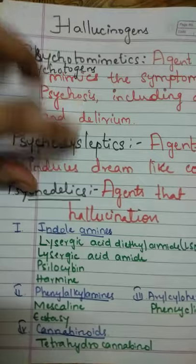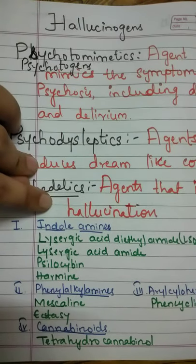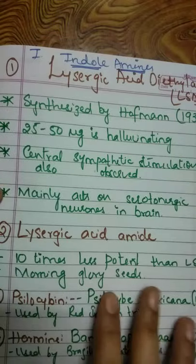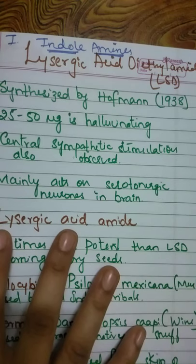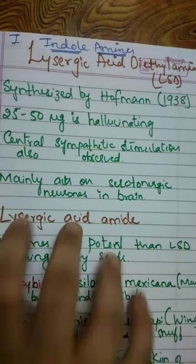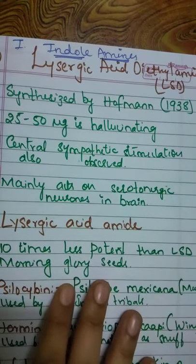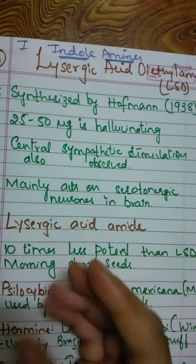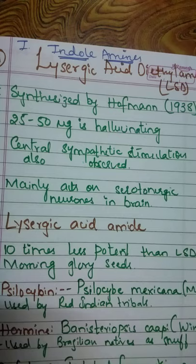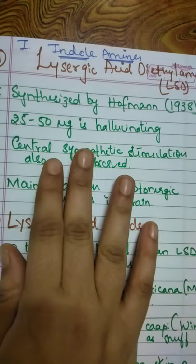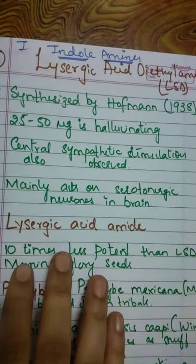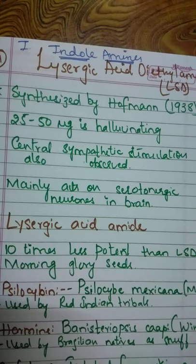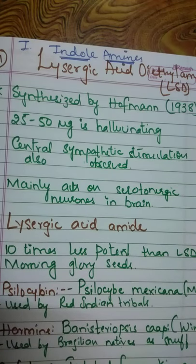Now we'll look at drugs that induce hallucinations, starting with indole amines. The first drug in this class is lysergic acid diethylamide, abbreviated as LSD. It was synthesized by Hoffman in 1938 while he was working on the chemistry of ergot alkaloids, and he himself experienced its hallucinogenic effect. As little as 25 to 50 micrograms of LSD is sufficient to produce hallucinogenic action.